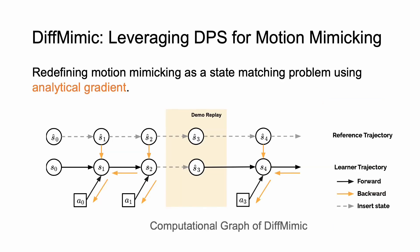To this end, we propose DiffMimic. DiffMimic leverages DPS for motion mimicking by redefining the process as a state-matching problem. We aim to minimize the distance between the policy rollout and the reference motion, exploiting differentiable physics simulators for direct gradient propagation.